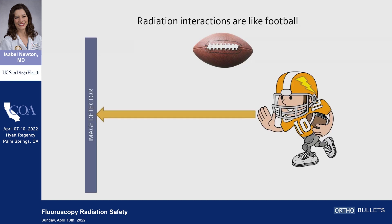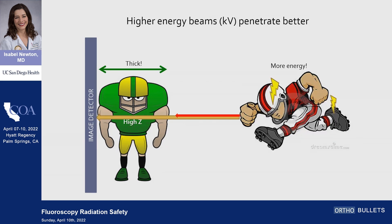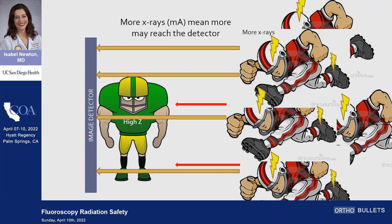Radiation interactions are like football. Here's a little guy — he's a photon, he's trying to get to the detector, nothing's in his way, he gets there. You put in a person who's high atomic number and very thick — he's not going to reach the detector. So how do we overcome that? We can add a more energetic photon, higher KV, let him drive through. Or we can add more photons that are also of higher energy. In these different ways of modulating the beam, we have a higher ability to get the photons to the detector. But there is a cost — the cost is dose to the patient and cost to you, and they are proportionate.